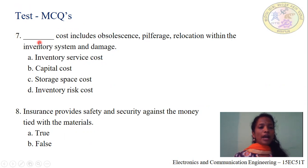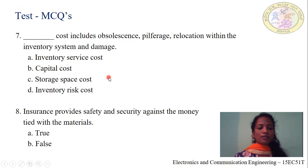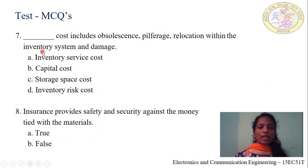Question number 7: Dash cost includes obsolescence, pilferage, relocation within the inventory system and damage. Option A: inventory service cost. Option B: capital cost. Option C: storage space cost. Option D: inventory risk cost. Again these are costs inclusive of demurrage charges. The cost which includes obsolescence, pilferage, relocation within the inventory system and damage is inventory risk cost. Hence, option D, inventory risk cost, is correct.